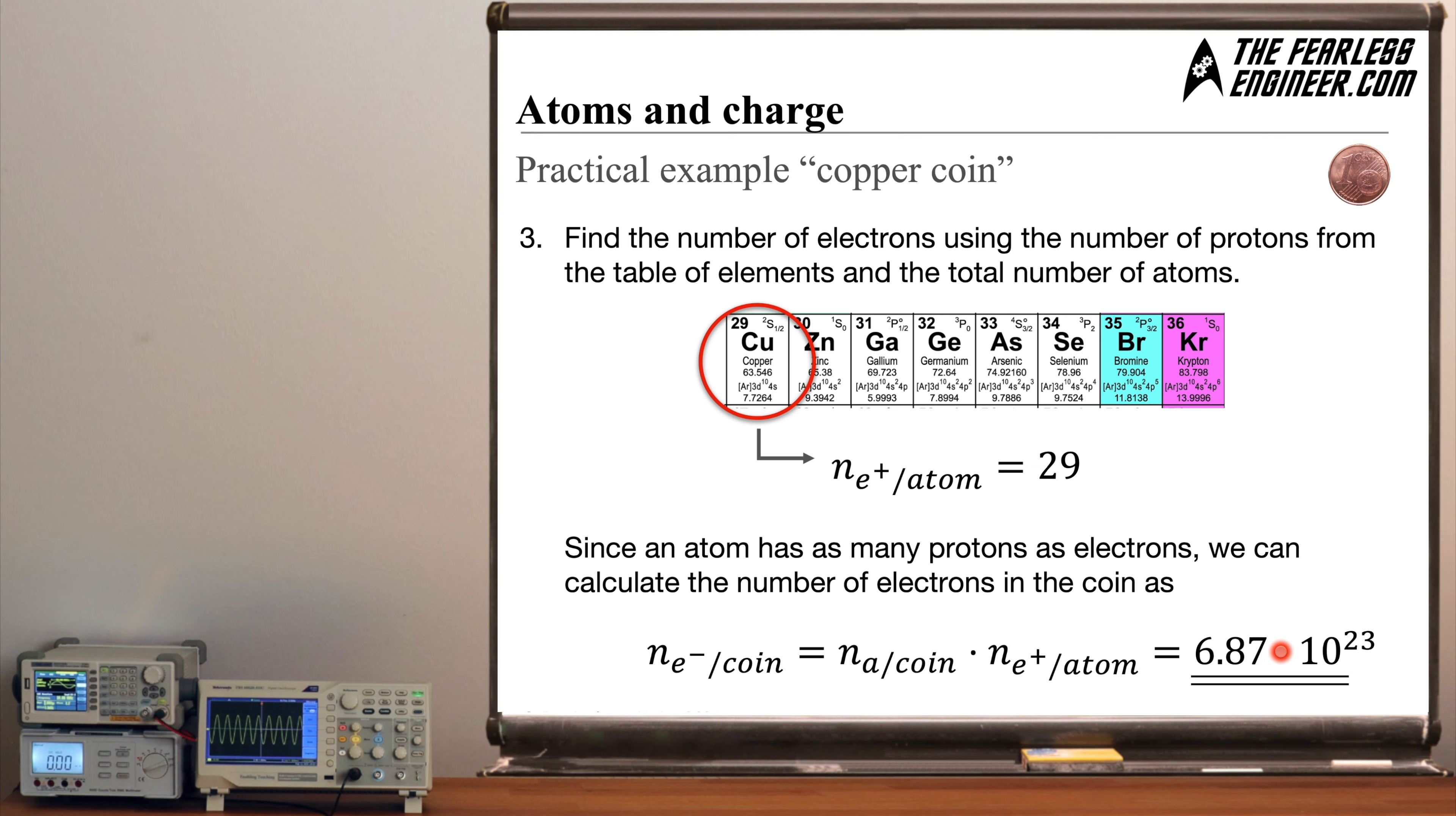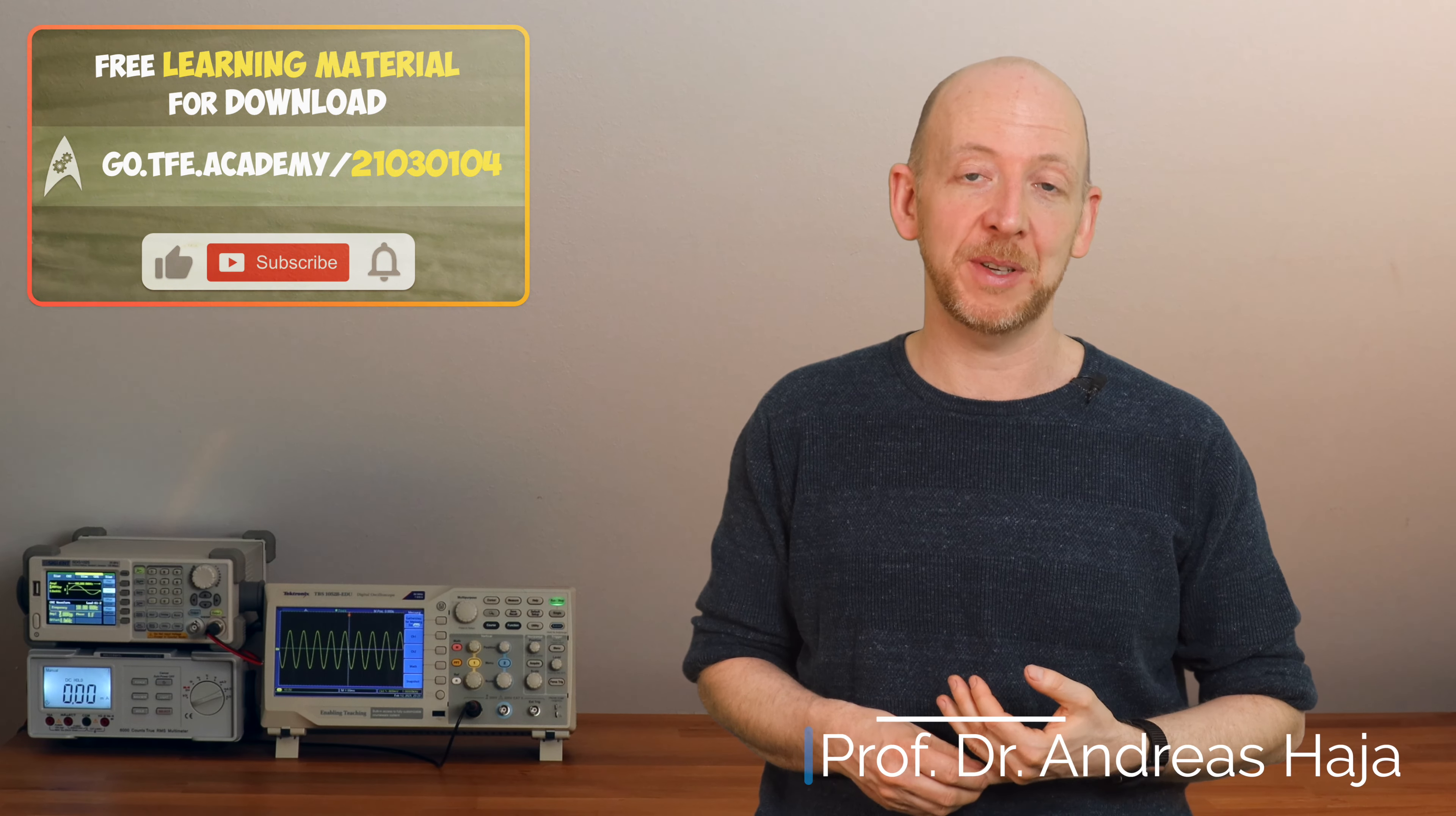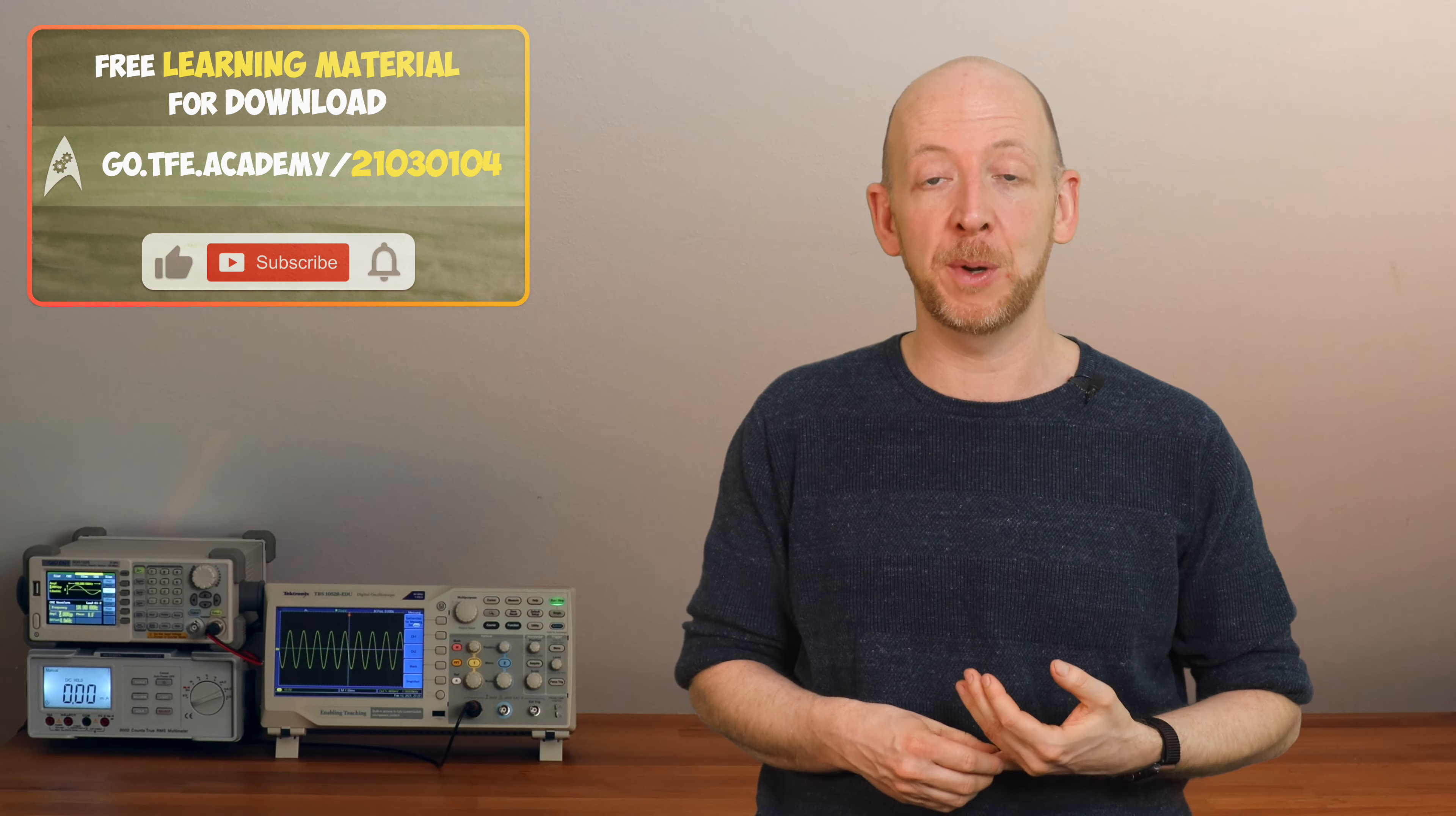And this means that we only have to multiply the number of atoms in our coin by the number of electrons of one atom. And this is how we arrive at this number here. 6.87 times 10 to the power of 23 electrons within a copper coin with a weight of 2.5 grams. Which is the result of this small exercise here.